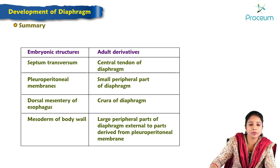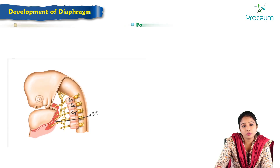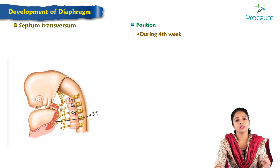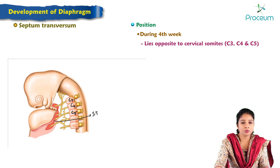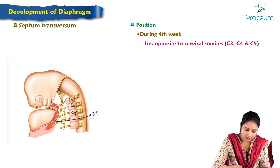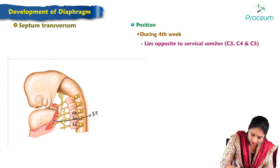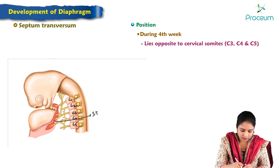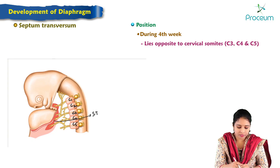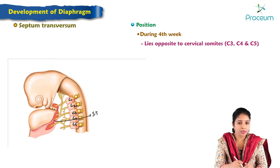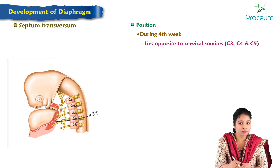Regarding the position of septum transversum: during the fourth week of intrauterine life, the septum transversum lies opposite to cervical somites C3, C4, C5. The occipital myotomes invade into the septum transversum, forming the central tendon of the diaphragm. Therefore, the phrenic nerve has a root value of C3, C4, C5.